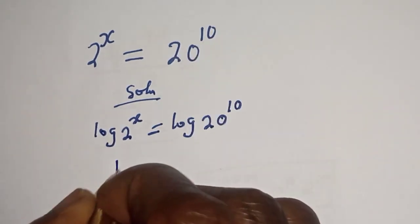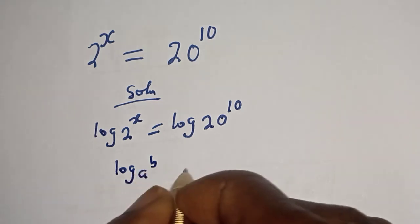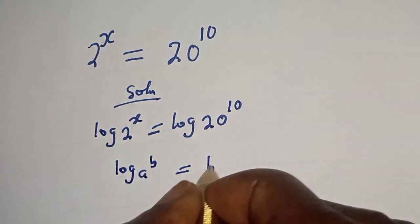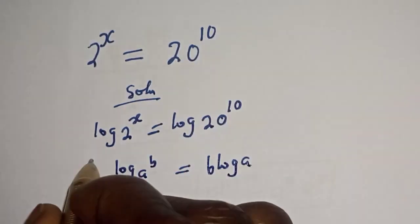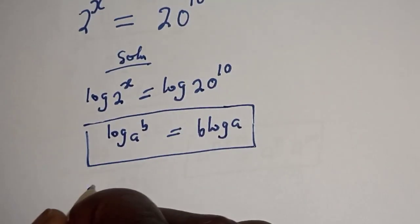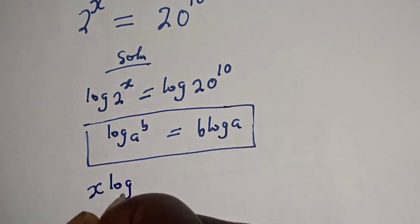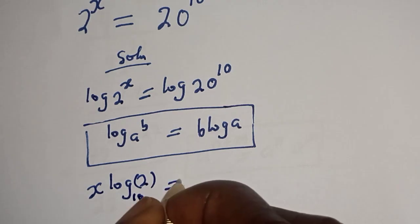If you have log a raised to power b, this is equal to b log a. Now this is x log 2. Let's make everything base 10 is equal to log 20 raised to power 10 base 10.